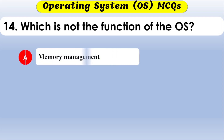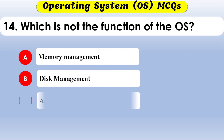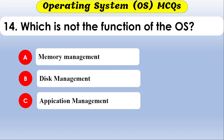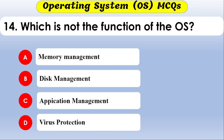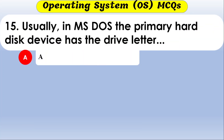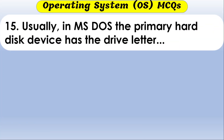Which of the following is not a function of an operating system? The options are memory management, disk management, application management, and virus protection. The correct option is virus protection — virus protection is not a function of the OS.